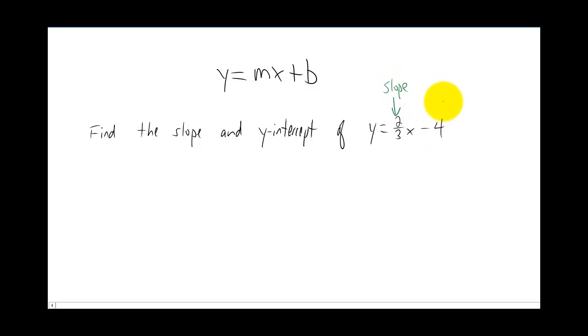And this negative four here represents the y-value of the y-intercept. So to answer the question, the slope of this line is two-thirds, and the y-intercept is a point. The x-value is always zero, and the y-value in this case is given to us as negative four.